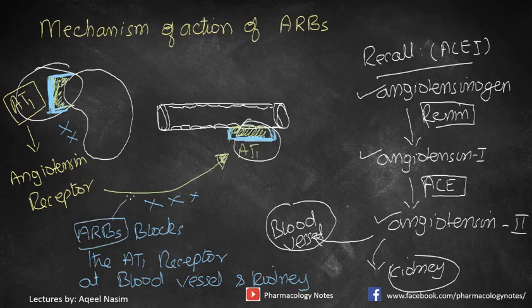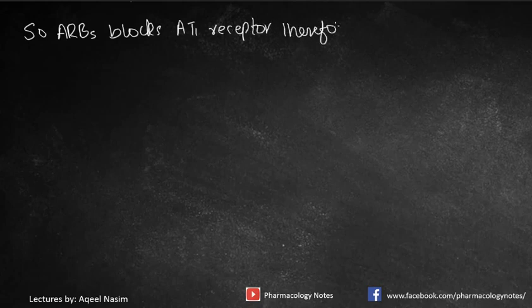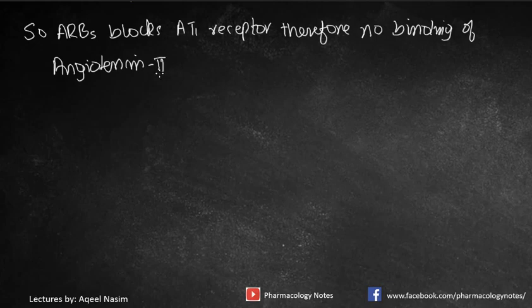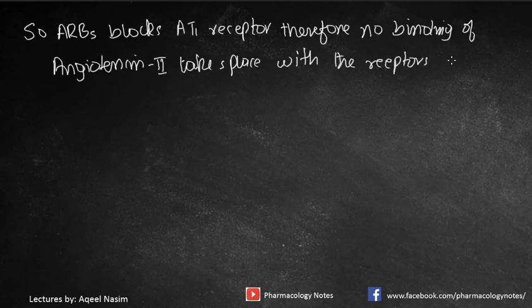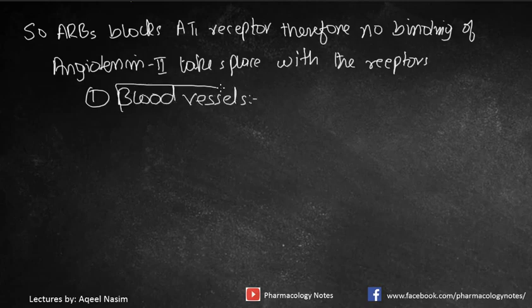As a result, there is no binding of angiotensin 2 to the blood vessels or to the kidneys. Therefore, there is no vasoconstriction and no aldosterone secretion. AT1 receptors are the main target for angiotensin receptor blockers. When ARBs are given, they block the AT1 receptor, so no binding of angiotensin 2 — a potent vasoconstrictor — takes place.